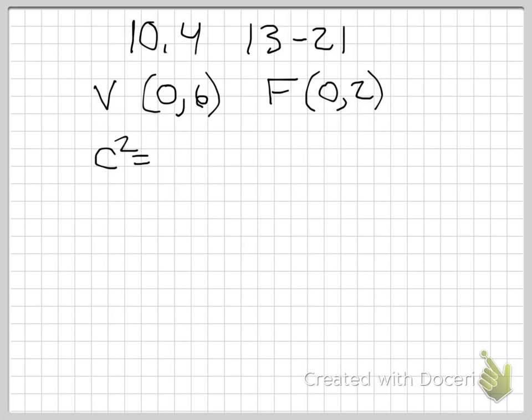C squared equals A squared minus B squared. So the foci is the square root of C, right? So we're going to have to go 2 squared equals 6 squared, and our co-vertex would be negative B.